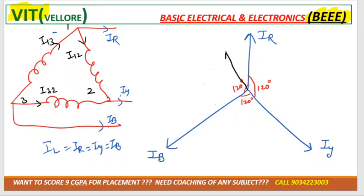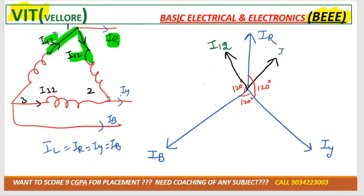The line current IR is divided into two phase current components: I12 and I13. One component is positive and the other is negative. So if I12 is positive, extending it gives minus I12; if I13 is negative, extending gives positive I13.